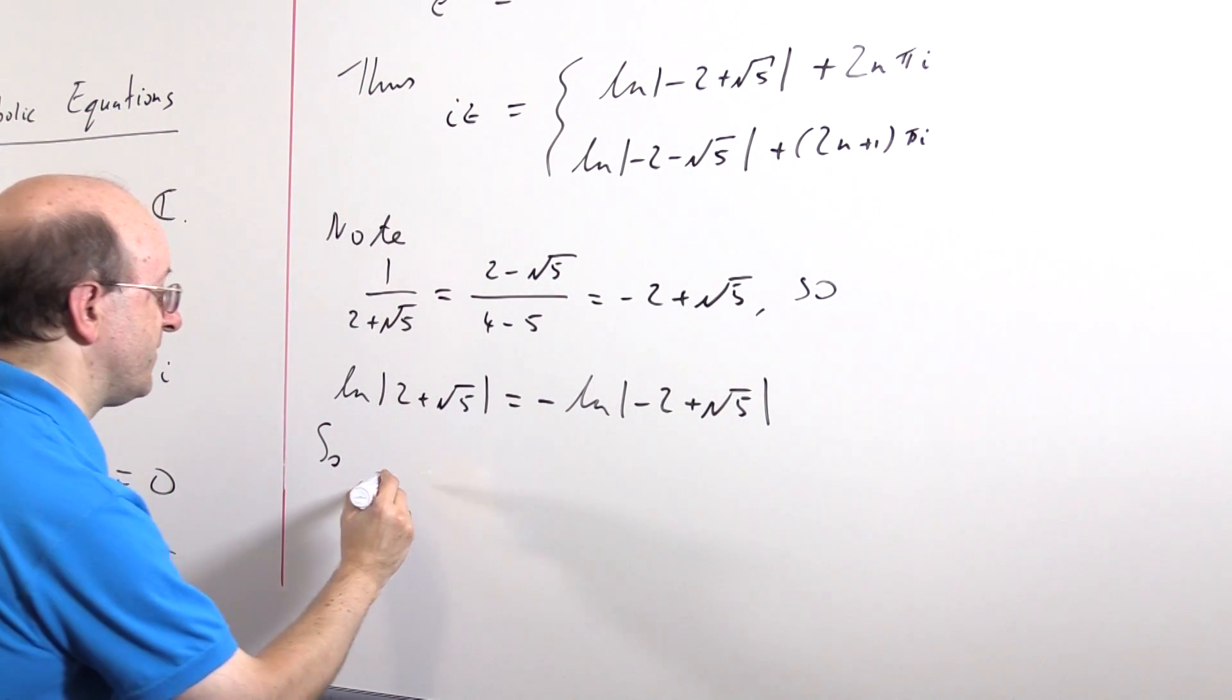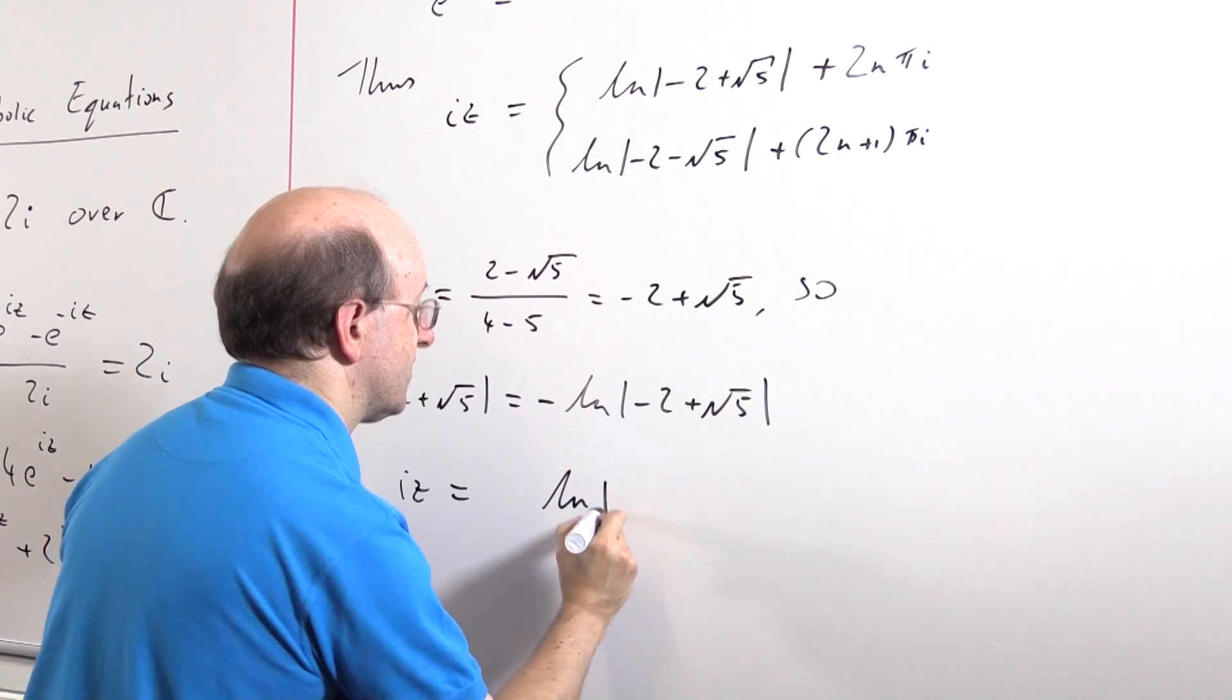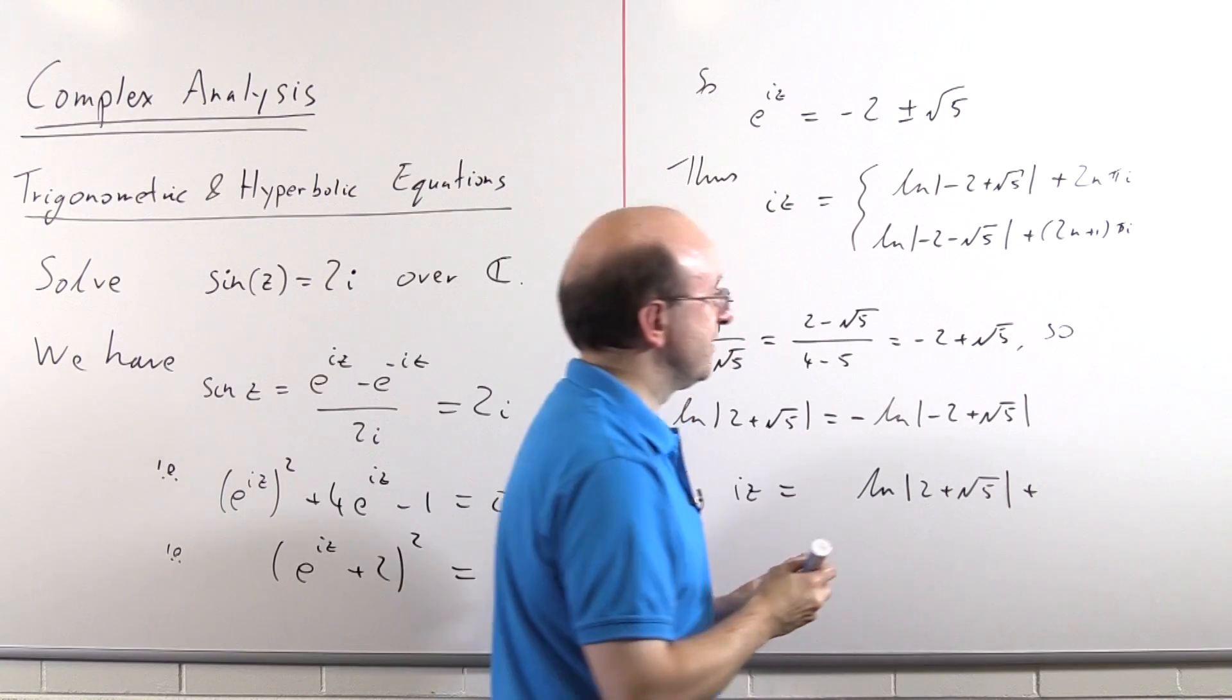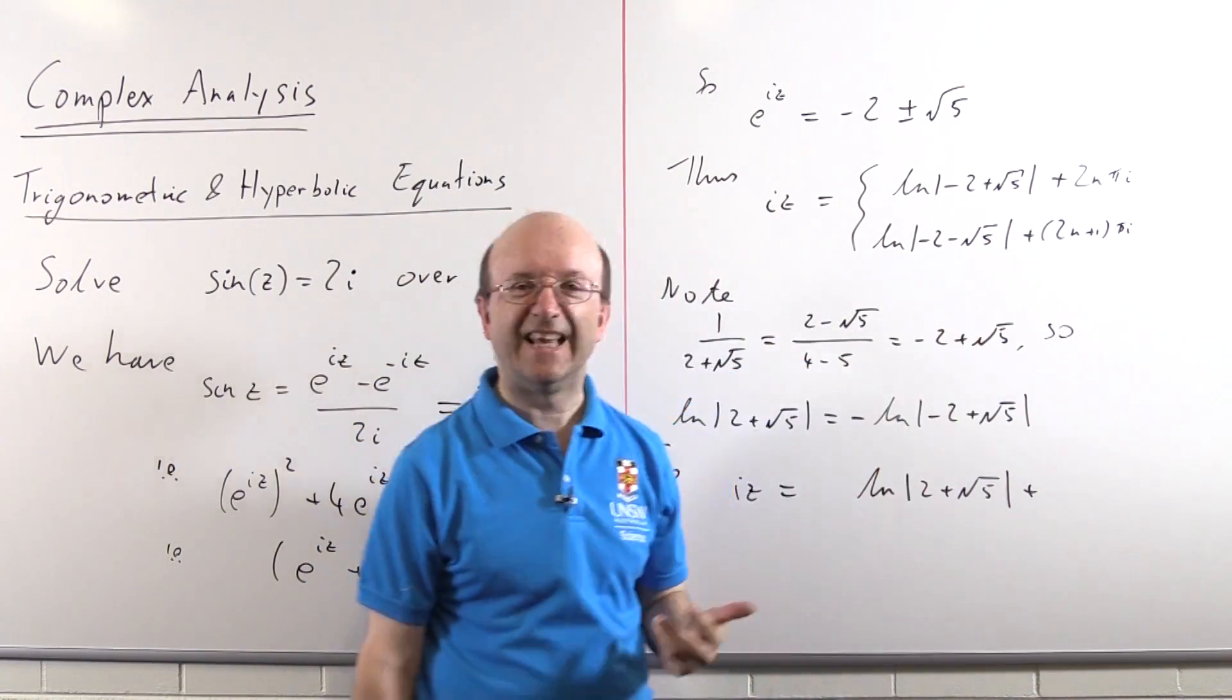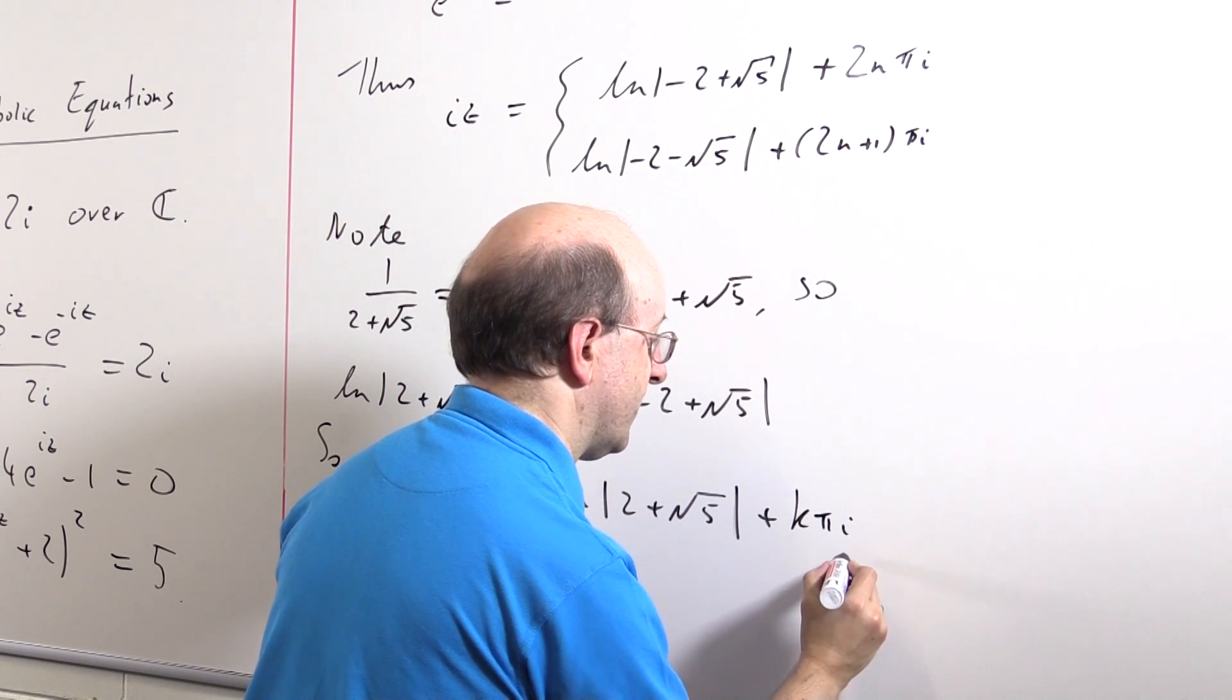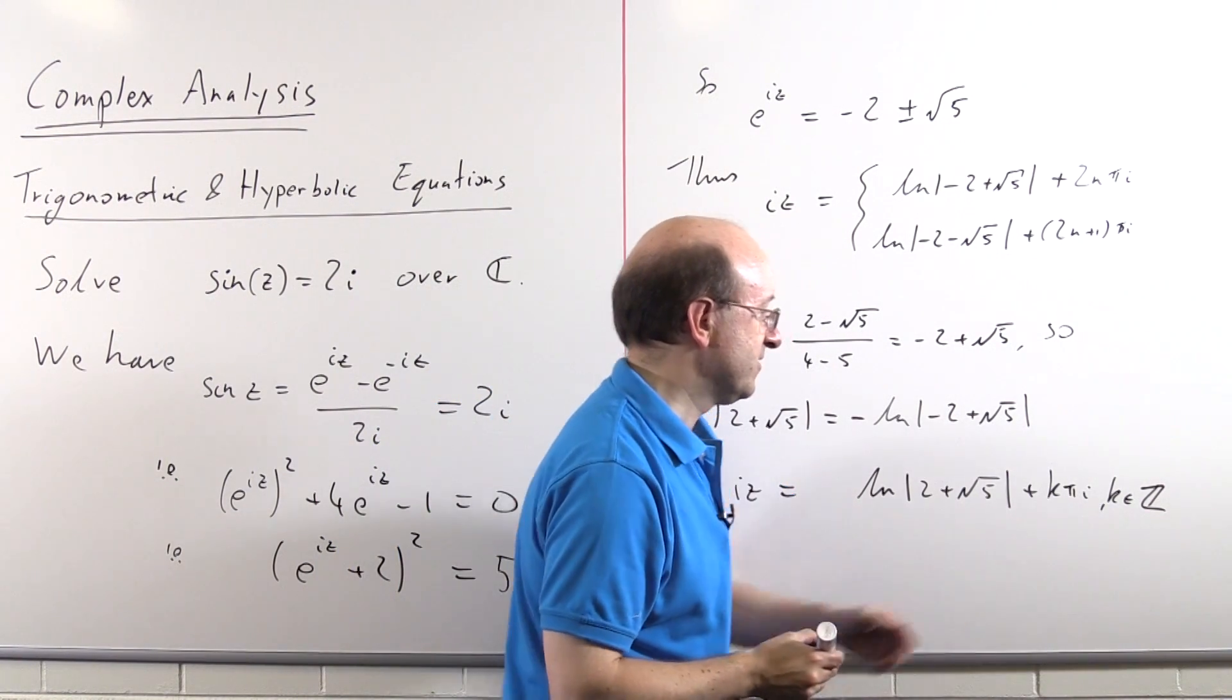So what have we got here? I'll leave the i in for the moment. iz is, well, let's use log of 2 plus root 5, plus some multiple of pi i, an integer multiple of pi i. I should have pointed out that n is an integer up here. And so I'm going to write that as k pi i for k an integer. And then I'm going to have to worry about, well, have I got a plus sign or a minus sign here? And it'll depend on what I've got.